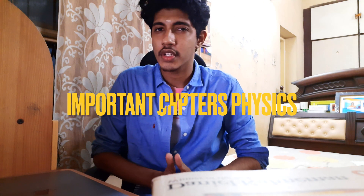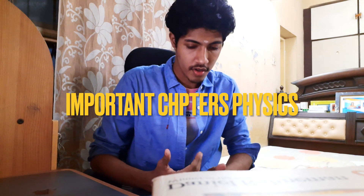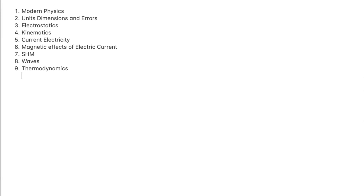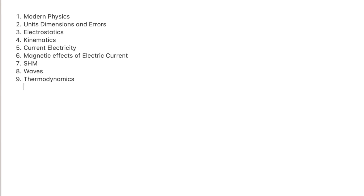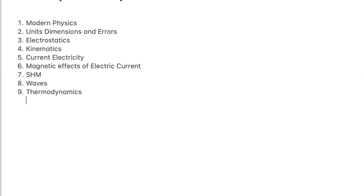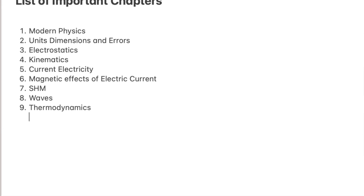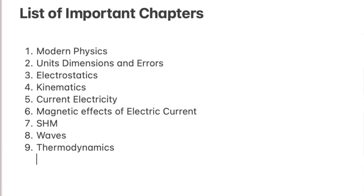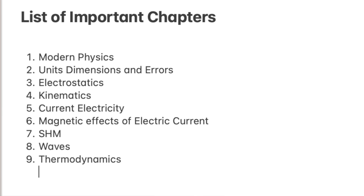Let me quickly tell you the list of important chapters that helped me score 47, which is near about 50 marks in JEE Advanced physics. The chapters are: modern physics, units and dimensions, electrostatics, kinematics, current electricity, magnetic effects of electric current, SHM, waves, and thermodynamics.